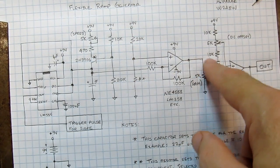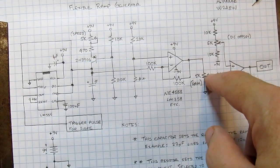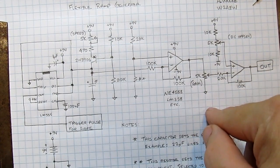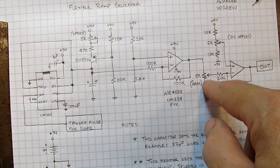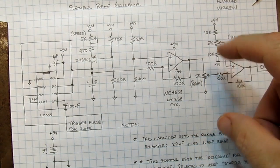The output of that buffer then goes into this pot, which allows me to adjust how big of a signal I'm going to pick off into this guy, which is an inverting gain stage with a maximum gain of five, or actually it has a fixed gain of five, and we're just adjusting the size of the signal going into it. So this is how I can adjust the magnitude of the ramp.